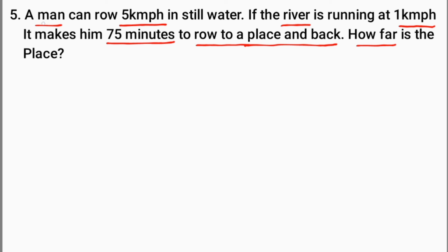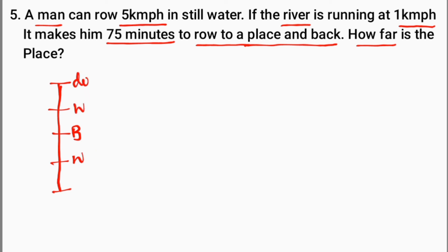Next problem: a man can row 5 km per hour in still water. That is the boat speed. The river current speed is 1 km per hour. Upstream and downstream total time is 75 minutes. How far is the place? Diagram: boat speed 5 km per hour, water speed 1 km per hour. Downstream is 5 plus 1 equals 6 km per hour. Upstream is 5 minus 1 equals 4 km per hour.